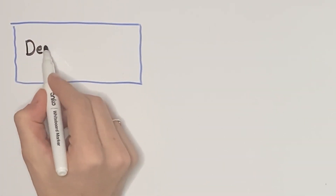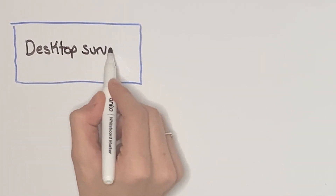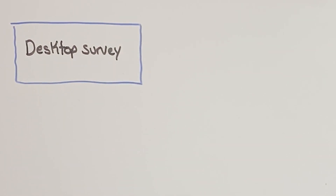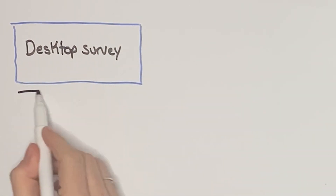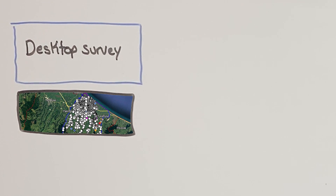Desktop survey to identify potential structures. We often start with a desktop exercise, but this is optional. It typically uses GIS layers with existing information such as roads, waterways and property boundaries to pinpoint likely crossing points where there might be structures.